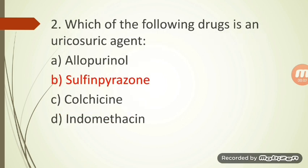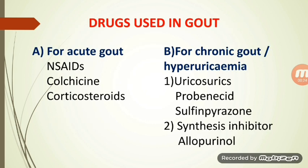Second question: Which of the following drug is a uricosuric agent? Option A: Allopurinol, Option B: Sulfinpyrazone, Option C: Colchicine, and Option D: Indomethacin. All these drugs are used for the treatment of gout.